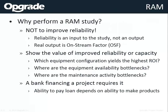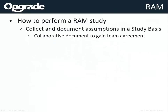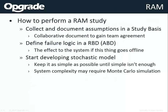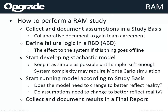We start with a study basis, then define the failure logic in a reliability block diagram — also called an availability block diagram — which shows what happens to the system if a piece of equipment goes offline. We put that into a stochastic model using one of several available software tools. You run the model, identify what needs to change, and iterate in a refinement process until you have a final report.